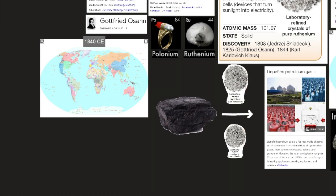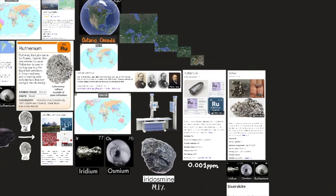And in 1840, Karl Karlovich Klaus, at the University of Kazan, extracted, purified, and confirmed it was a new metal. He kept Osann's name of ruthenium.